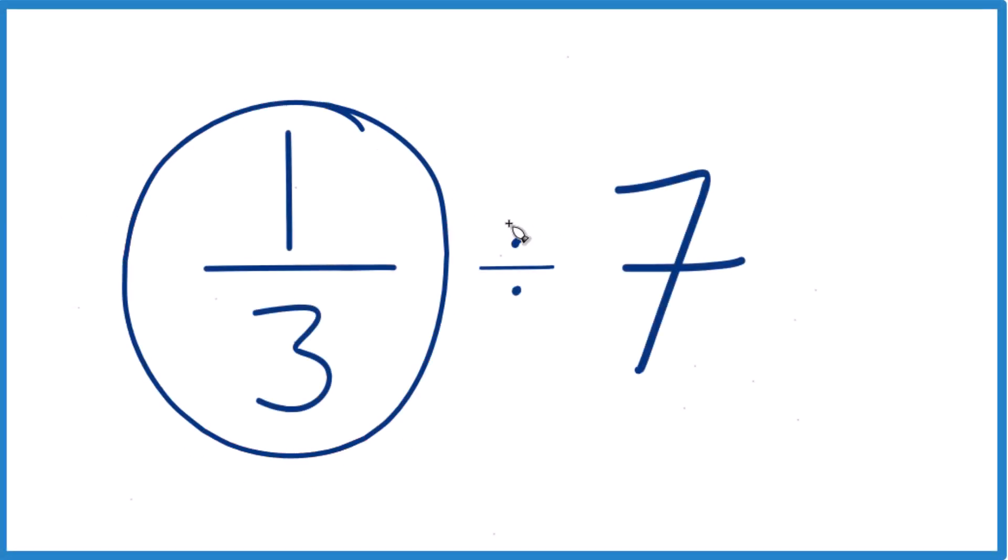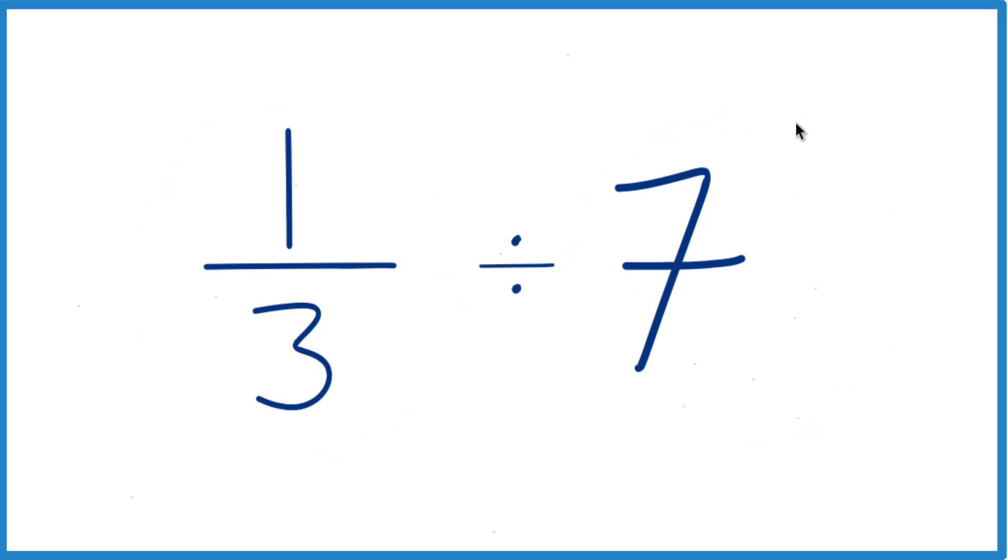So we have one third divided by 7. How do you figure that out? What I like to do is I like to take this 7 here. So we're going to take our 7, and instead of 7, we're going to call this 7 over 1. 7 divided by 1, still 7, but things line up a little better now.